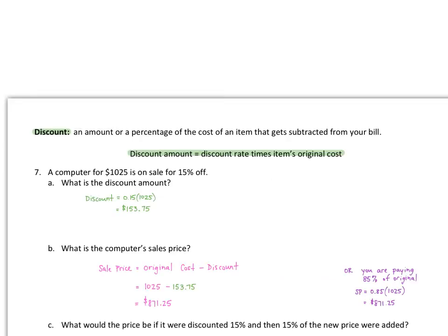Now let's talk discount. A discount is an amount or a percentage of the cost of an item that gets subtracted from your bill. Sales tax gets added to your bill; discounts get subtracted. The discount amount is the discount rate times the item's original cost — same calculation as sales tax, but this time we're subtracting it from the total.